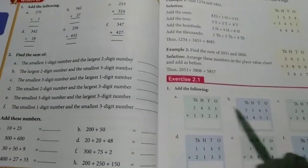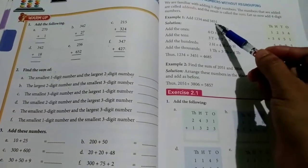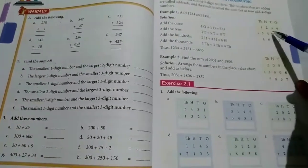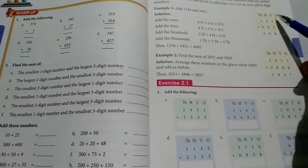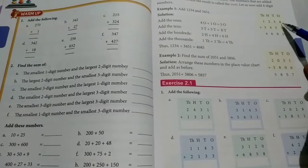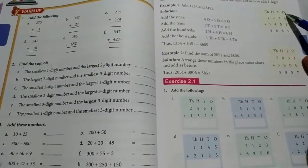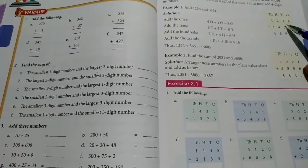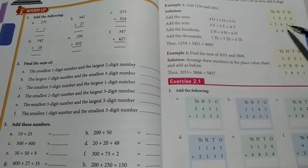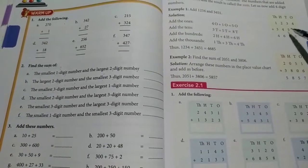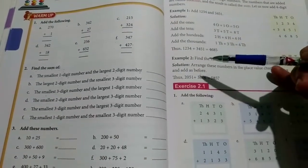Dear 3rd standard students, in the previous class we were discussing how to add the numbers. How to add the numbers and how to write the numbers with suitable places. For example here 4 and 1, for which place here? Ones. And for tens 3 and 5, hundreds 2 and 4, thousands 1 and 3. So for the suitable places we were writing and we were learning. And we finished this example number 1 and 2.